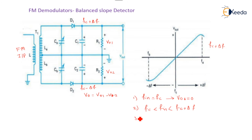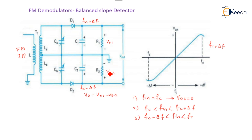Third case: fc minus Δf < f_in < fc. In this case, the induced voltage in winding T2 is higher than that of T1, so the voltage to diode D2 is higher than D1. Hence the negative output V02 is higher than V01, and the output voltage of the balanced slope detector is negative. The negative voltage increases as the frequency moves closer to fc minus Δf, reaching its maximum negative value when it reaches fc minus Δf.